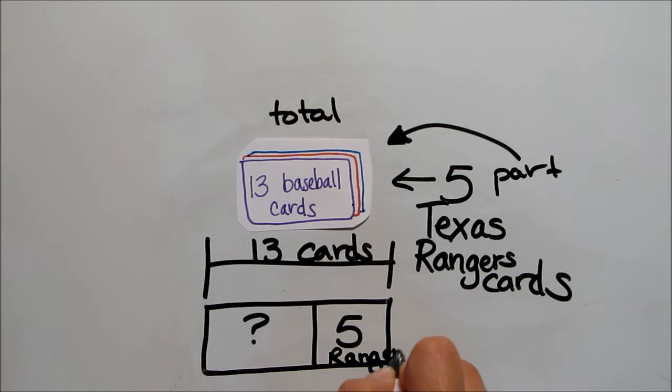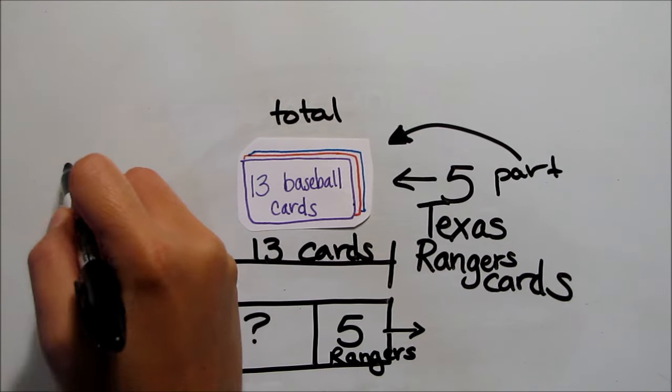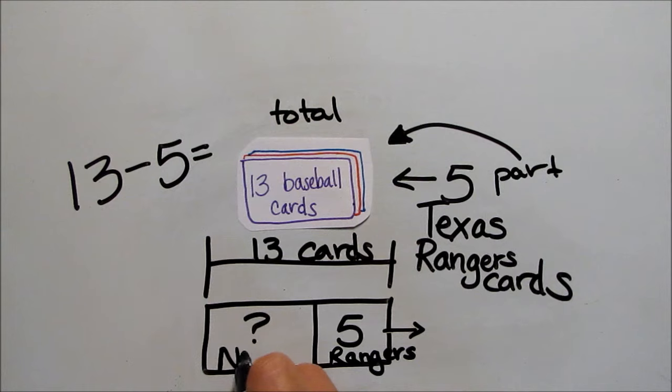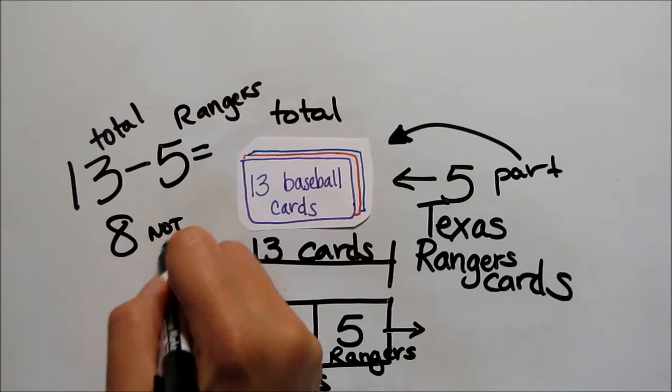but we don't know how big the other piece is. If we start with our total and separate the piece we know, what we're left with is all of Jose's baseball cards that are not Texas Rangers. So we've just used a strip diagram to show subtraction.